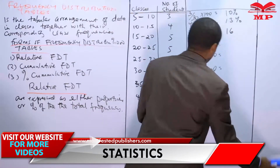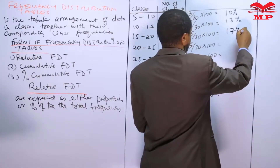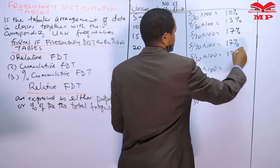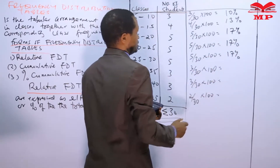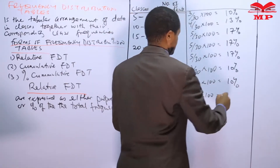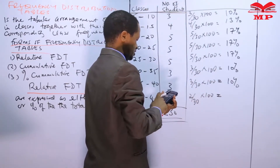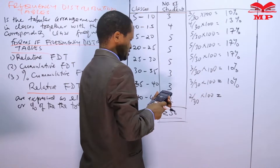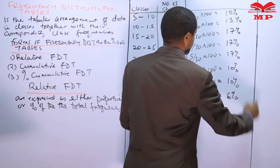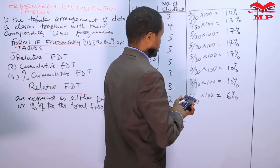Continuing the calculations: 17 percent, 17 percent, 10 percent, 10 percent. Then 2 divided by 30 times 100 is 6 percent.